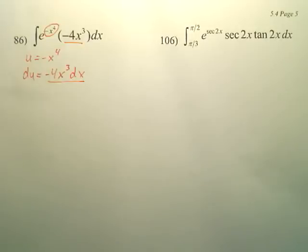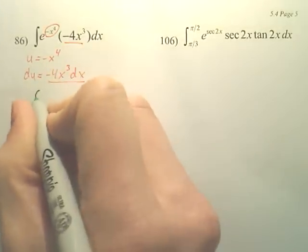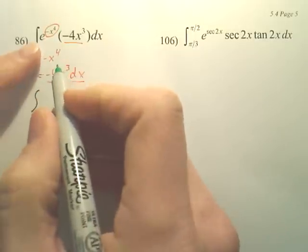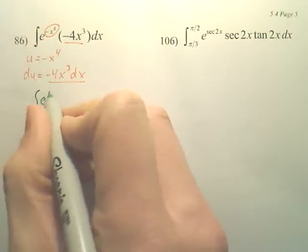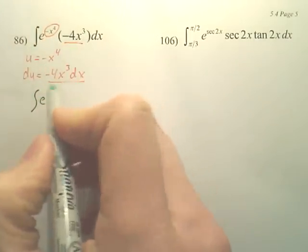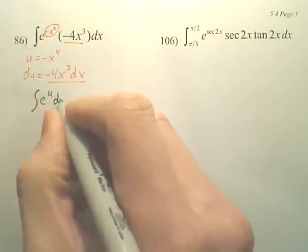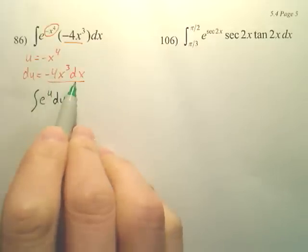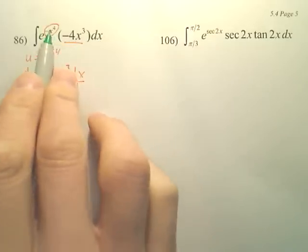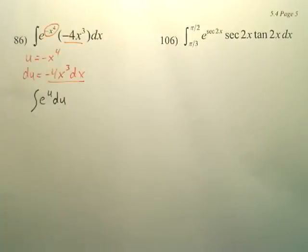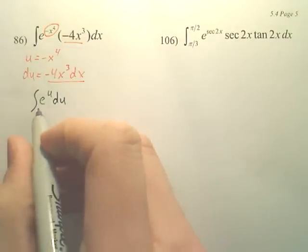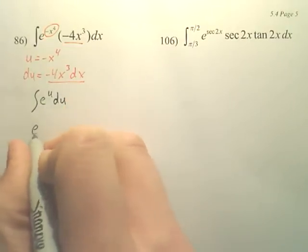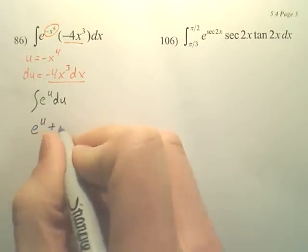This ends up being an overly easy problem, because all you end up with is e to the u. This becomes du. Again, this replaces this. This is u. And then this integral is very easy. The answer to the e to the u is e to the u, but plus c.